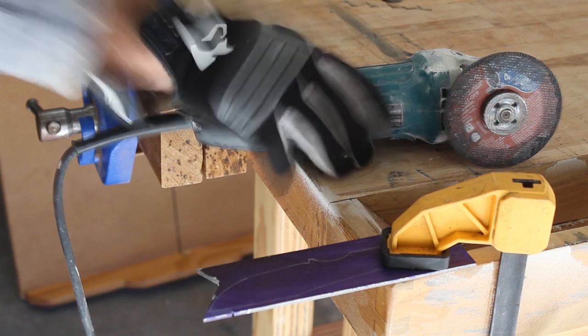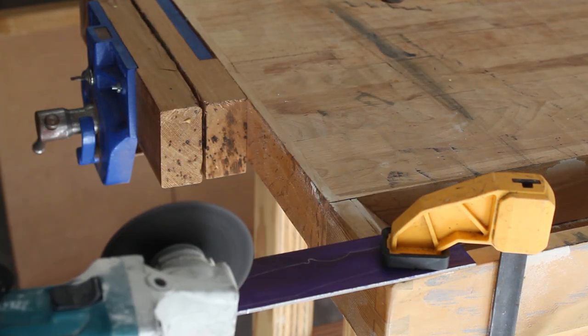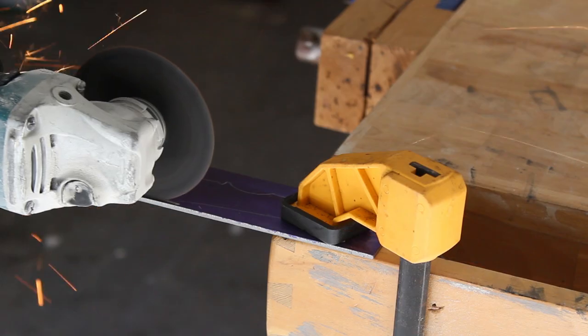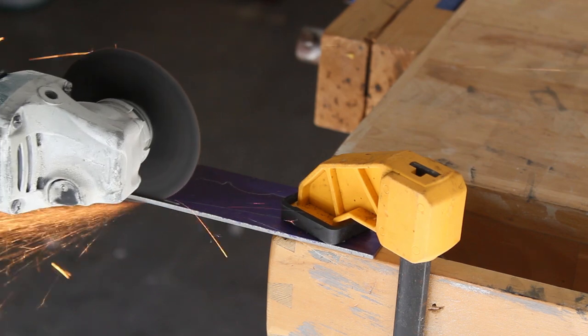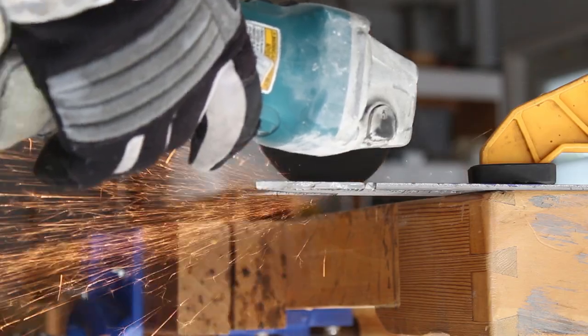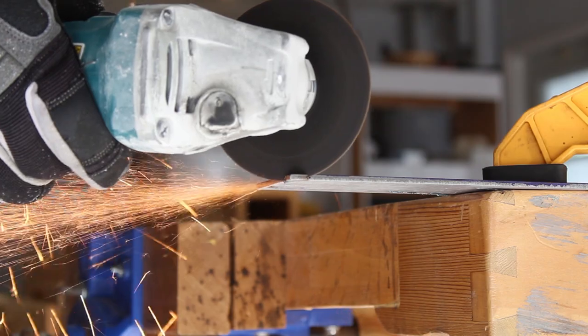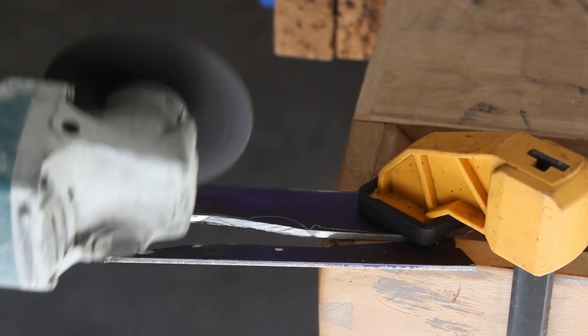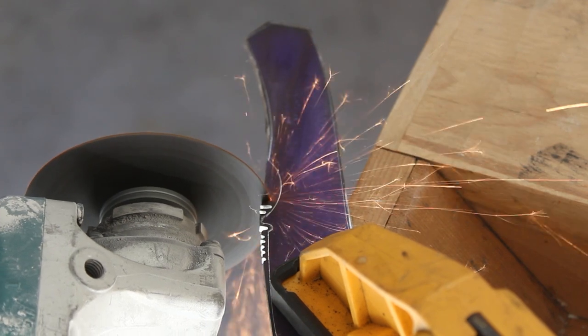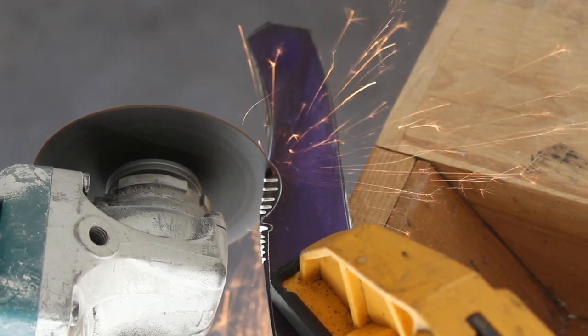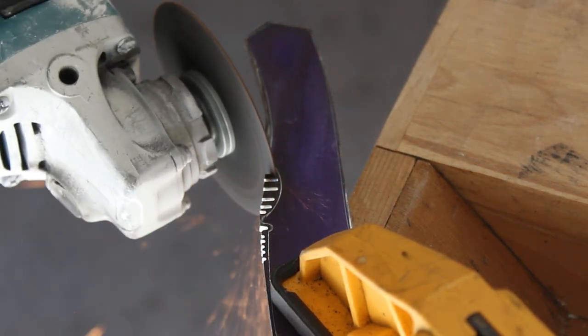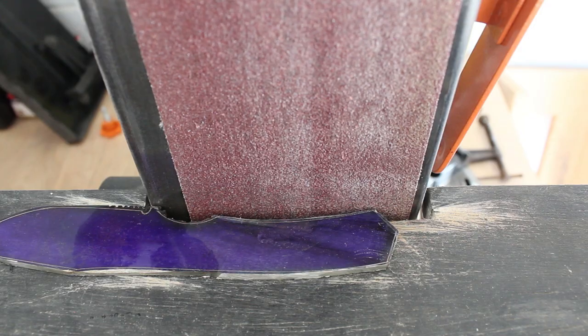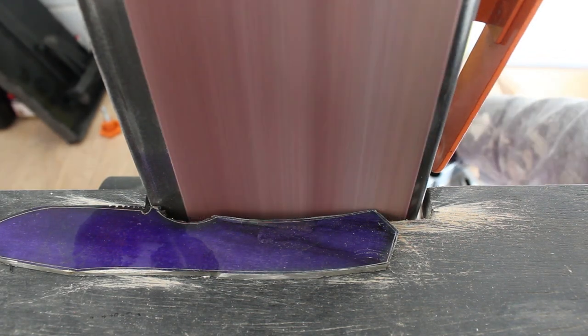Next, I'll use an angle grinder to cut out the knife. Now I'll use my WEN 4x36 belt sander to dial in the profile.